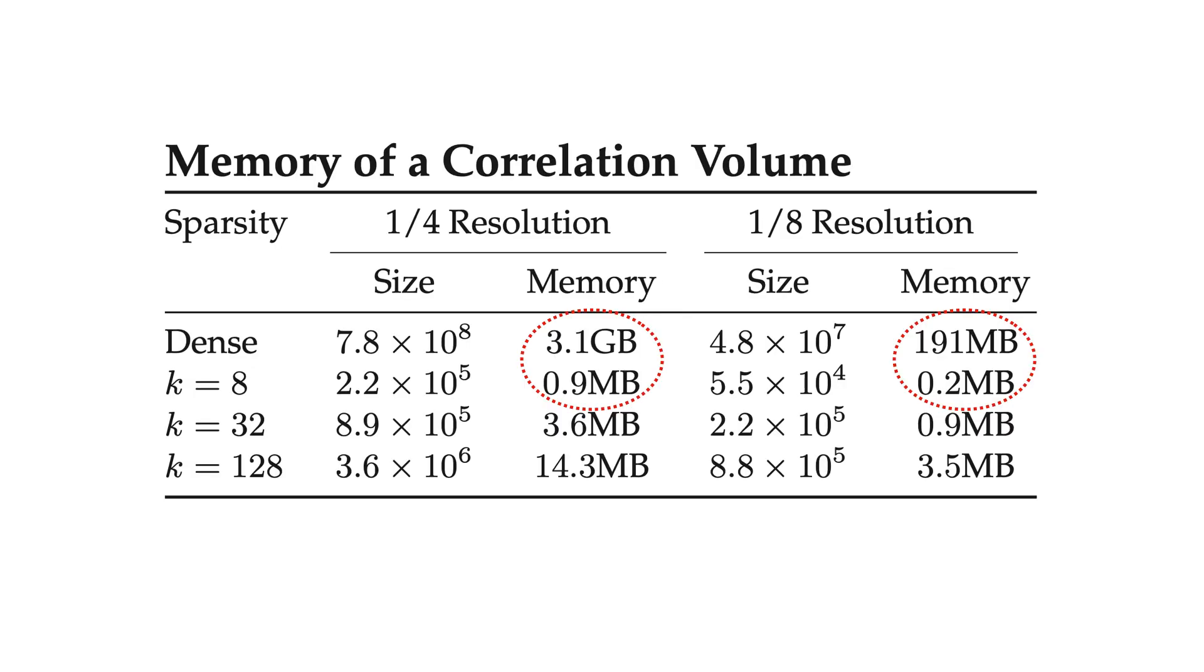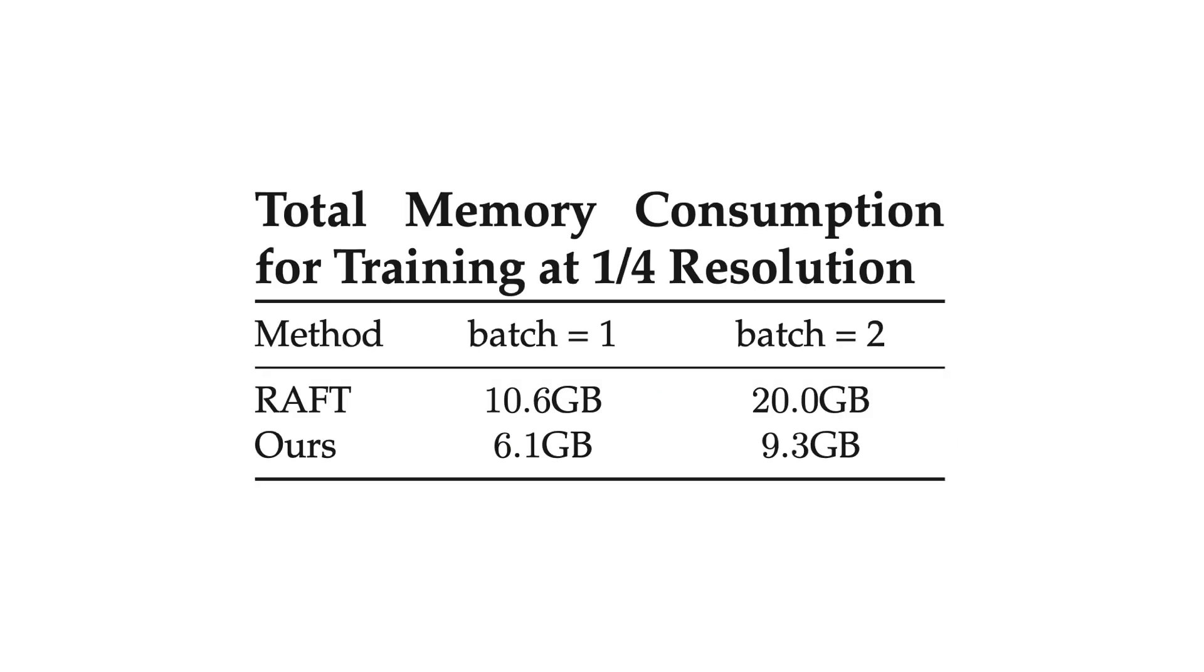Looking at the memory consumption of the correlation volume, the sparse correlation volume is 2 to 3 orders of magnitude smaller compared with the dense correlation volume. When both training at quarter resolutions, our approach also consumes far less memory compared to the dense approach.